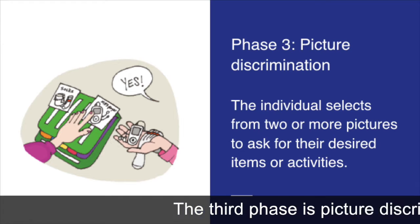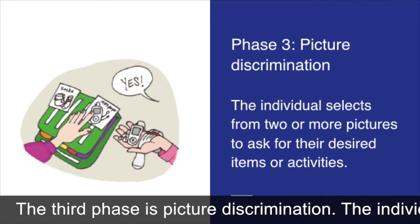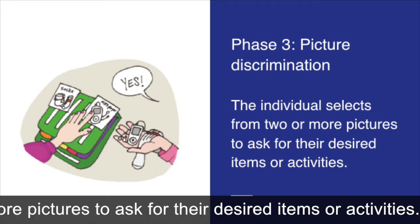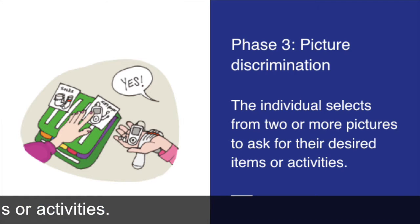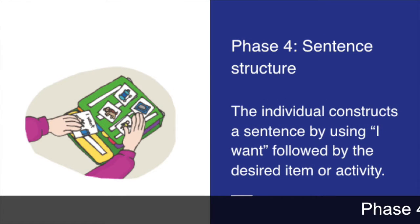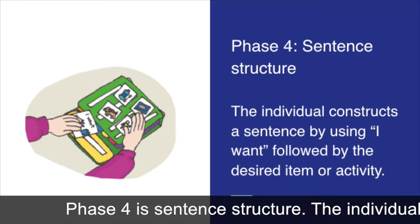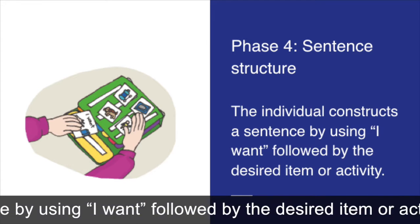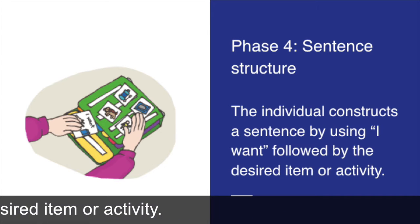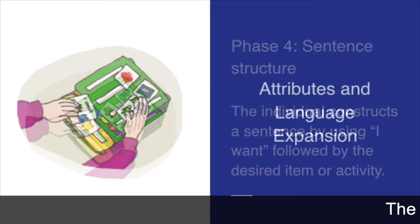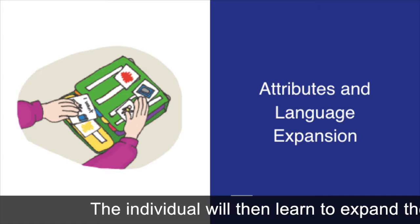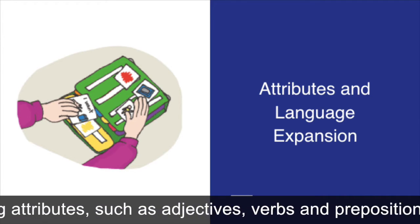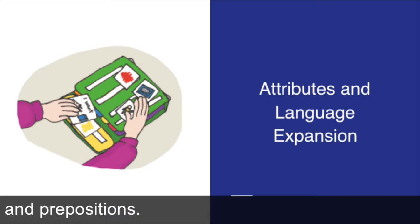The third phase is Picture Discrimination. The individual selects from two or more pictures to ask for their desired items or activities. Phase 4 is Sentence Structure. The individual constructs a sentence by saying 'I want,' followed by the desired item or activity. The individual will then learn to expand their sentences by using attributes such as adjectives, verbs, and prepositions.